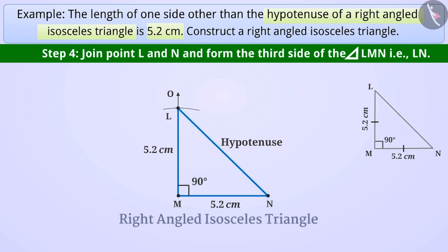Thus, we have obtained a right angled isosceles triangle LMN where MN is equal to ML is equal to 5.2cm and angle M is equal to 90 degree.